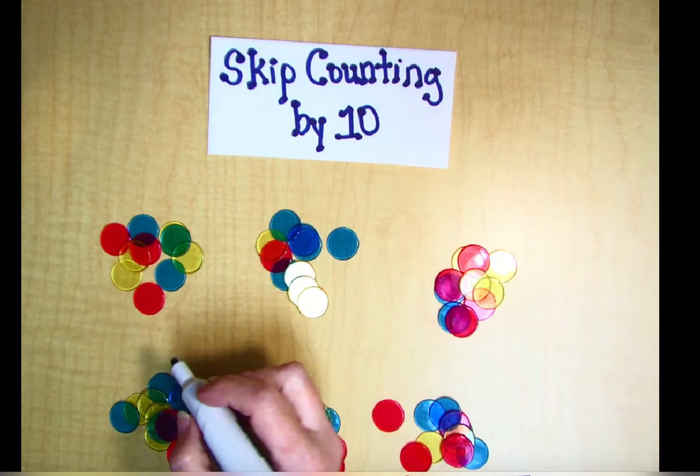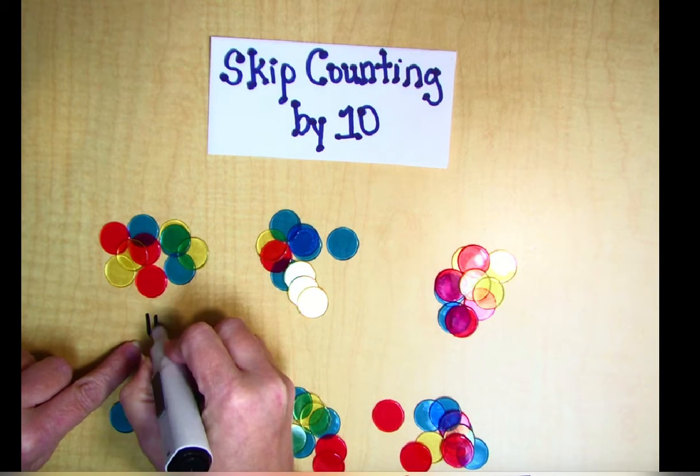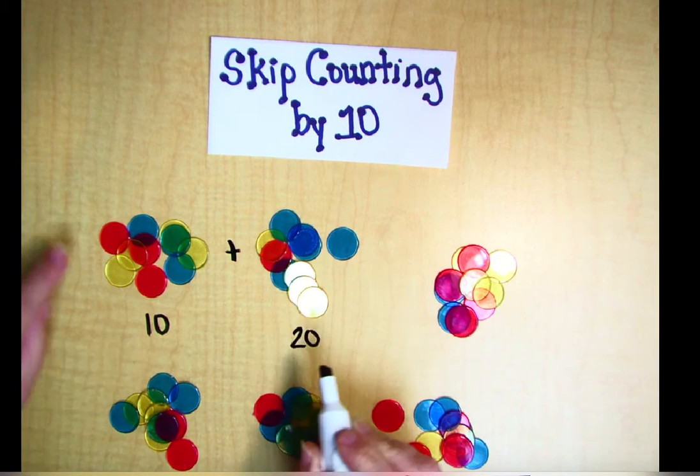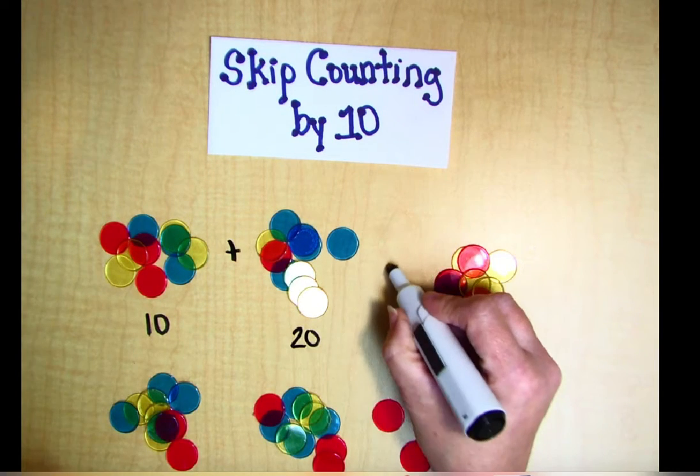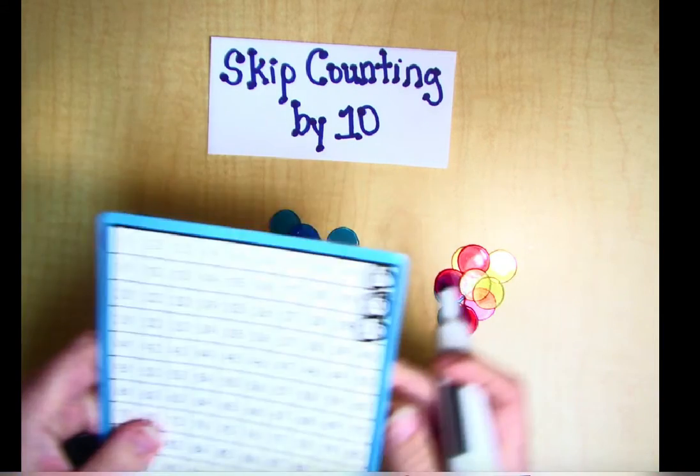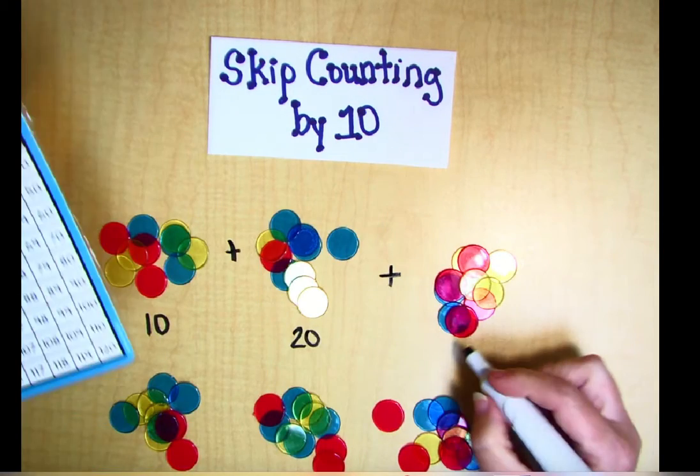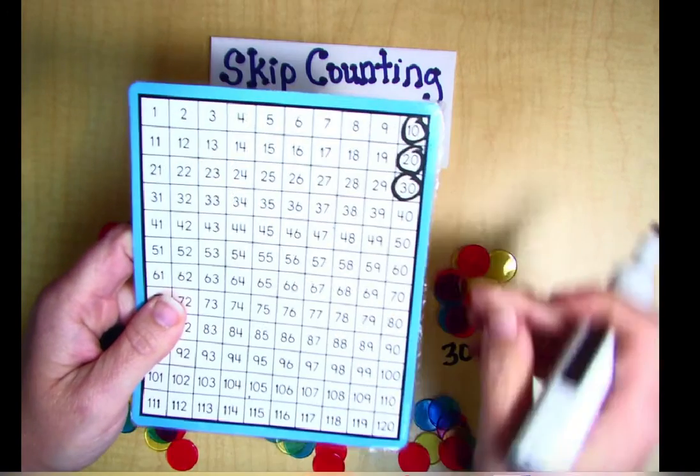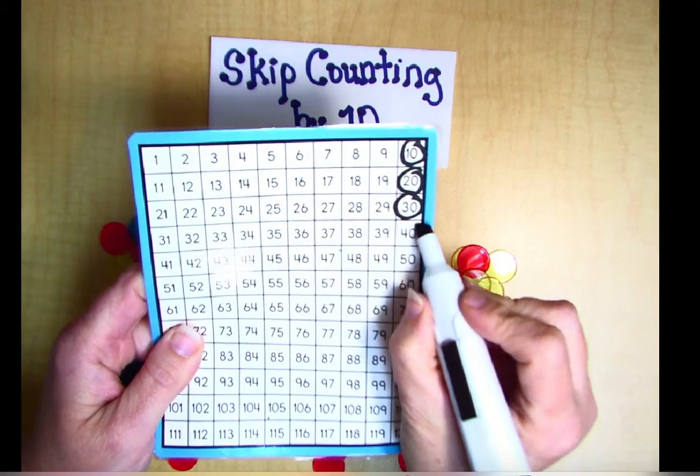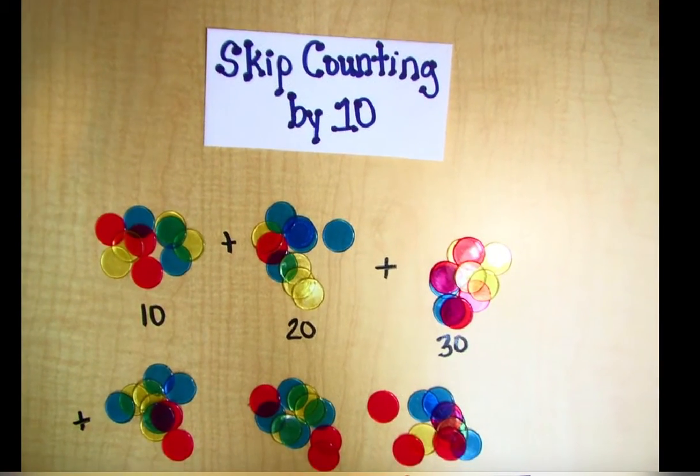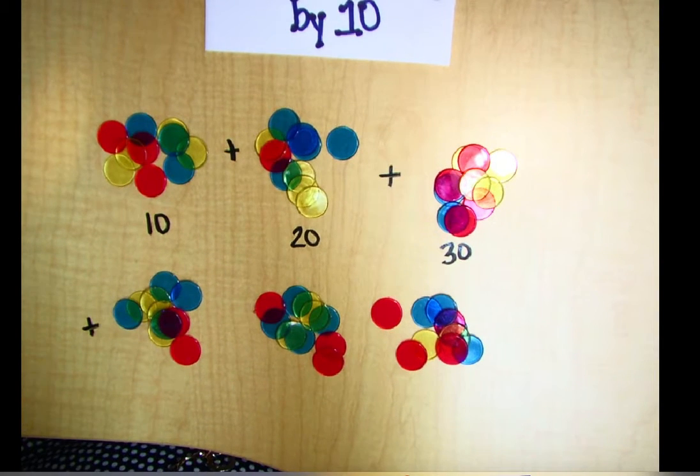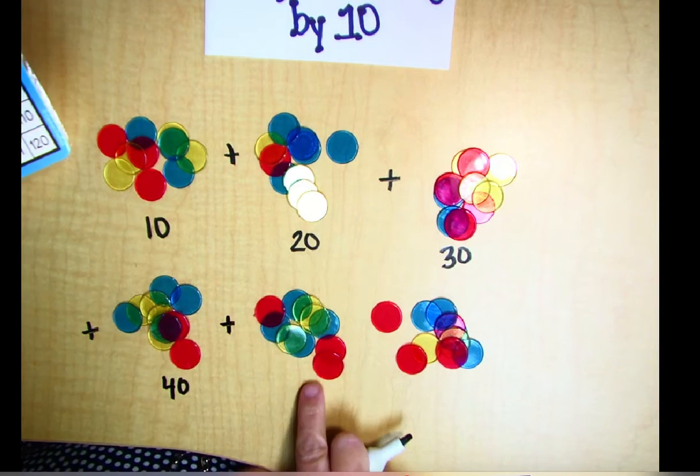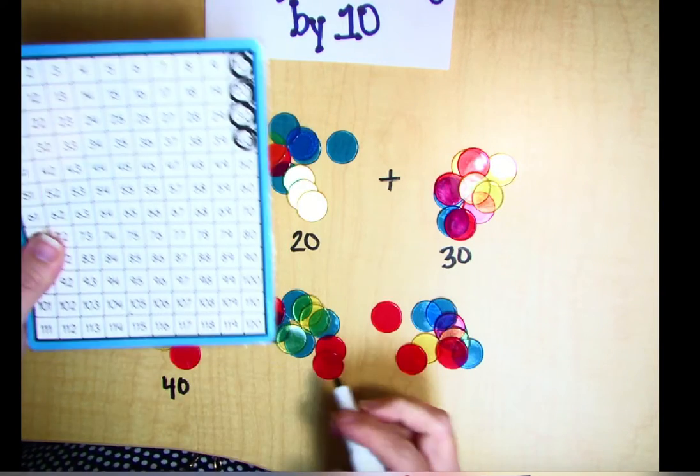So like this one right here is 10. And then plus 10 more, that's going to equal 20 altogether. Plus 10 more is going to equal 30. And then plus 10 more is going to equal, that's right, 40. We've got four groups of 10. Let me turn that down where you can see it a little bit. So this one's going to be 40. What do you think this one's going to be? That's right, 50.